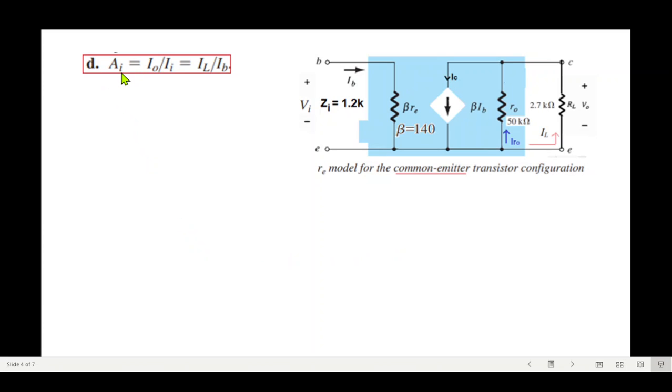Next is the current gain ai, which is i out divided by i in, or in this case it will be i load divided by ib.